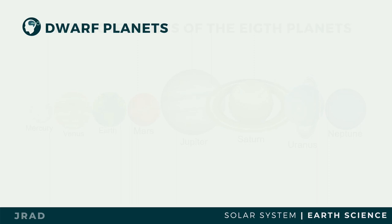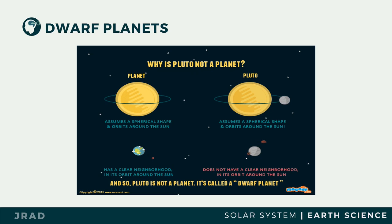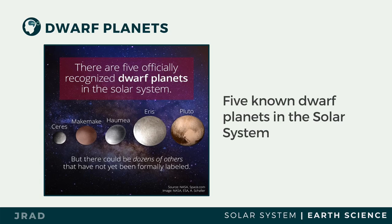Dwarf planets orbit around the Sun and should also have enough mass to form themselves into a spherical shape. But unlike planets, dwarf planets do not have a clear immediate neighborhood of all smaller objects around the Sun. This is the reason why Pluto was removed from the list of planets in the solar system.